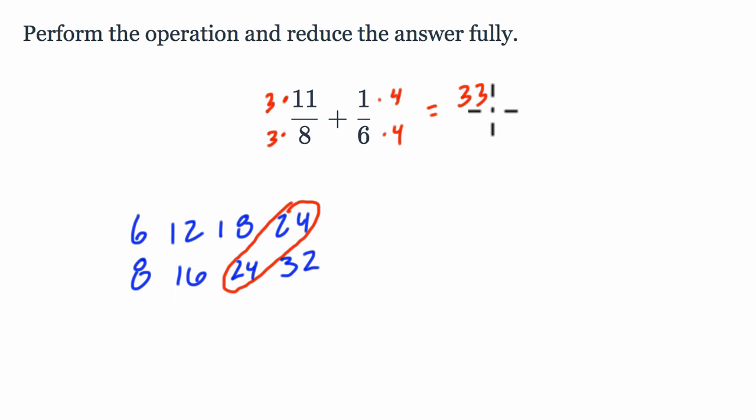I'm going to get 33 over 24, so I did 3 times 11 and 3 times 8, and that's 33 over 24, plus 4 over 24.